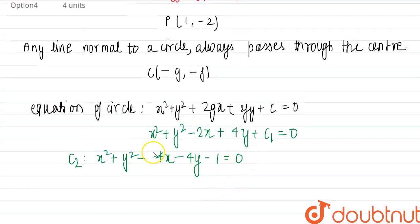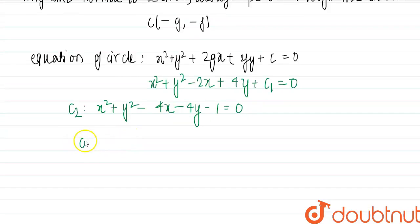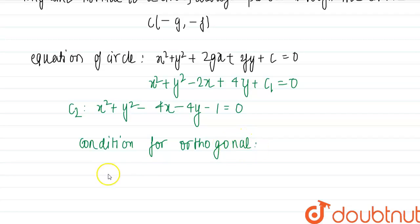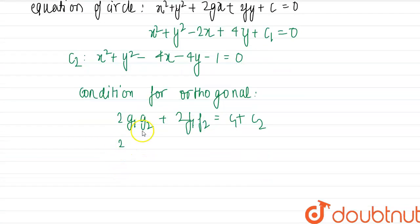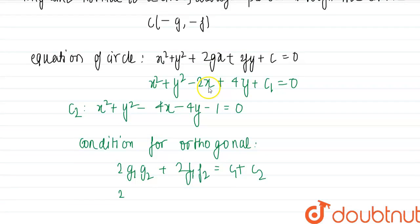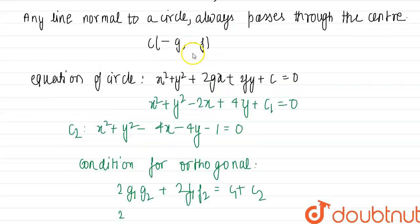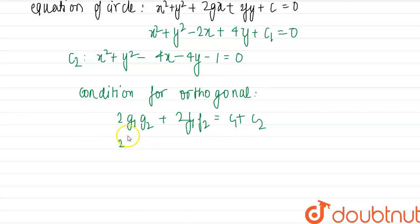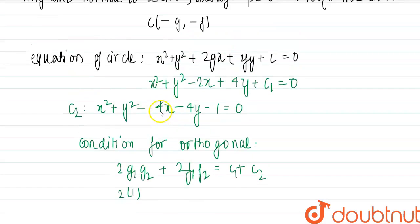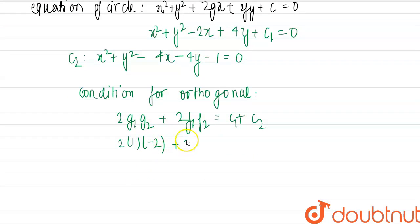And they both are orthogonal to each other so the condition for orthogonal is 2 times of g1, g2 plus 2 times of f1, f2 equal to c1 plus c2. So 2 times of g1 into g2.